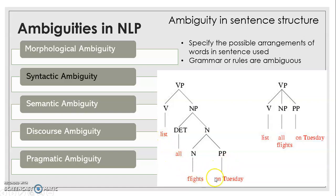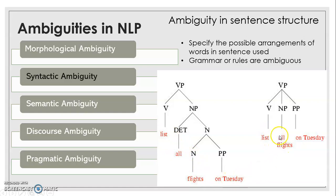In general, for a given sentence there should always be one exact parse tree. But here two parse trees are possible, leading to two different interpretations. For example, 'list all flights on Tuesday' — this could mean: list down all flights on the day Tuesday, or list all flights which fly on Tuesday. Since the grammar rules are ambiguous, there is ambiguity in the sentence structure.